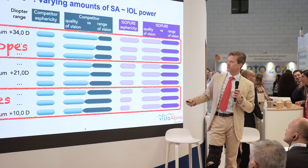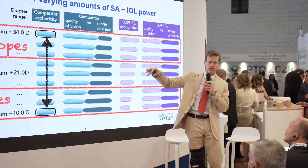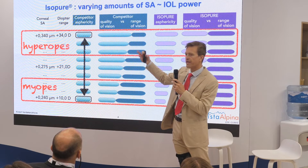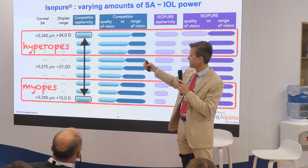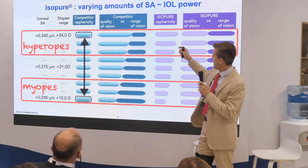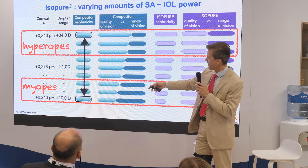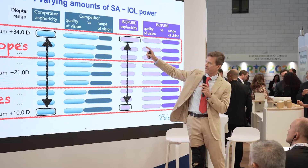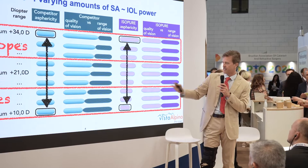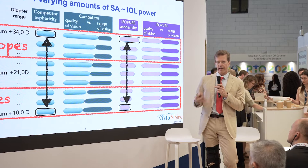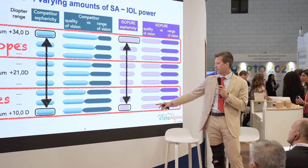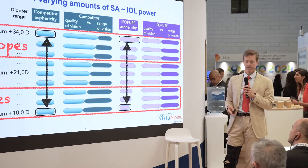According to IOL power, if we take two extremes: an extreme hyperope's cornea in general will have more positive asphericity, and the myope on the other hand will have less. Isopure nicely balances that — more negative asphericity for the high hyperopes, which makes sense, and less for the myope. So isopure can nicely balance defocus and quality of vision across the entire spectrum.